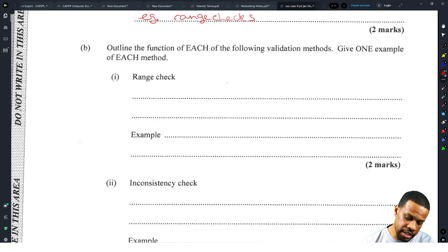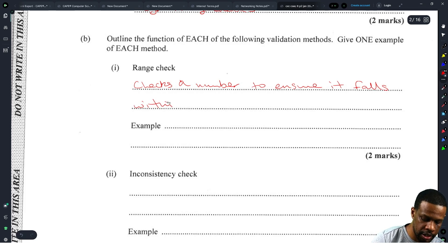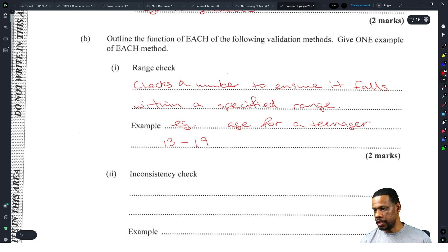Outline the function of each of the following validation methods. Range check would be checks a number to ensure it falls within a specified range. Example: age for a teenager should be 13 to 19. That's an easy range check there. You're checking to see if the numbers between a particular range, and if you're looking for the age of a teenager you want to check between 13 and 19.